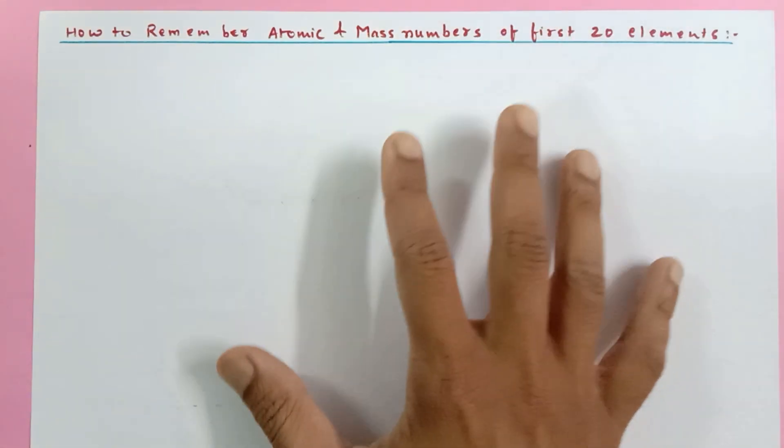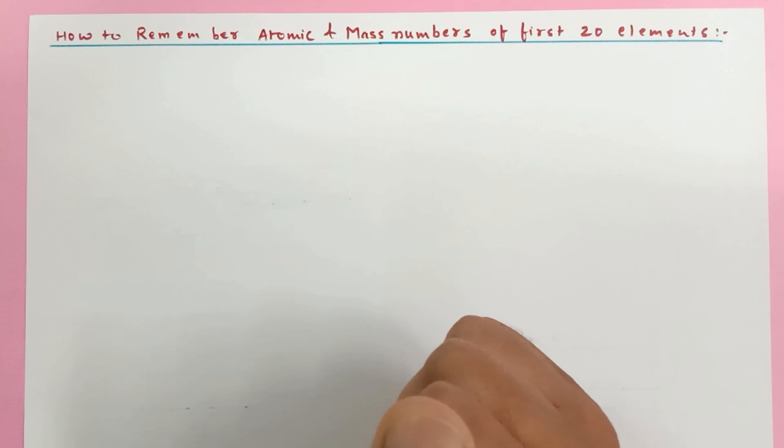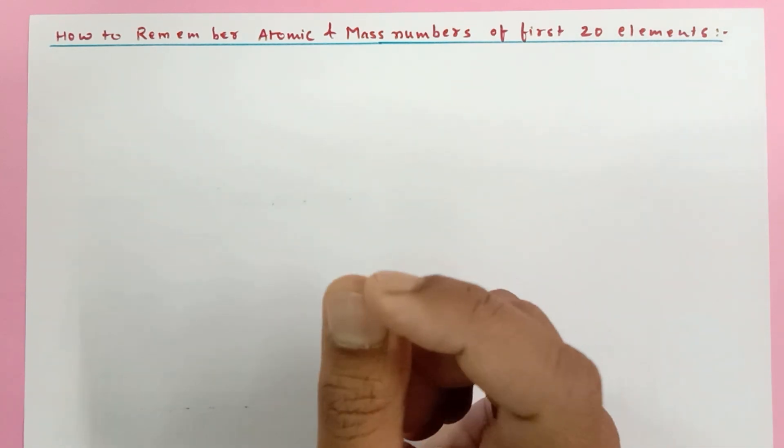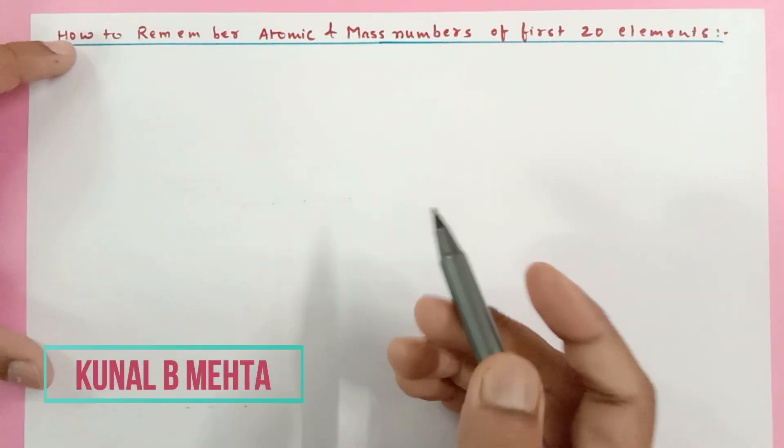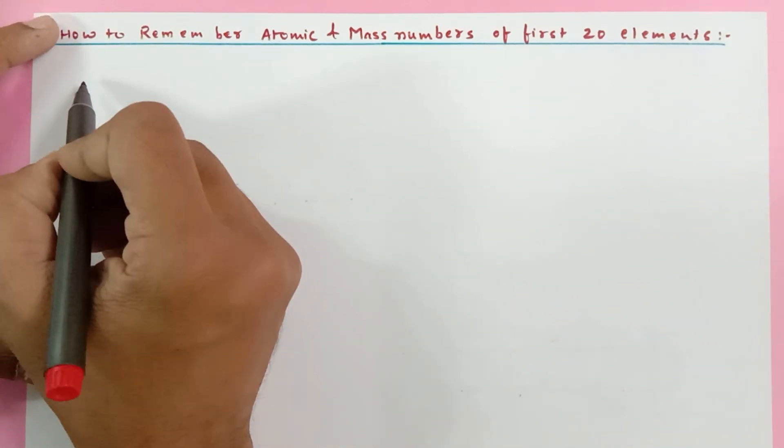So it is a very easy trick to remember the first 20 elements, the mass numbers and atomic numbers, but there are a few exceptions and we'll talk about them. So let's write down first of all all 1 to 20 elements in sequence.